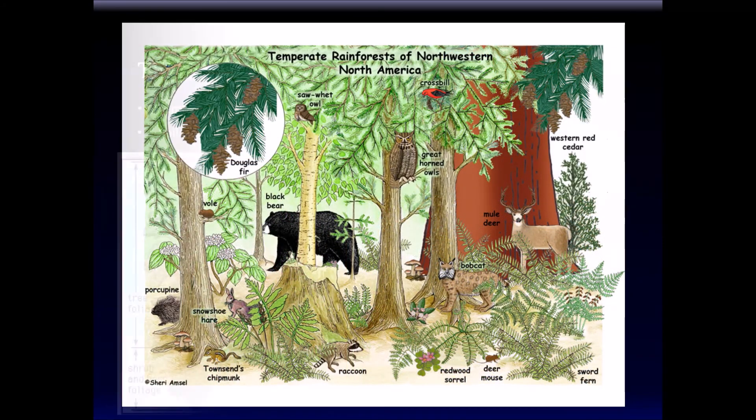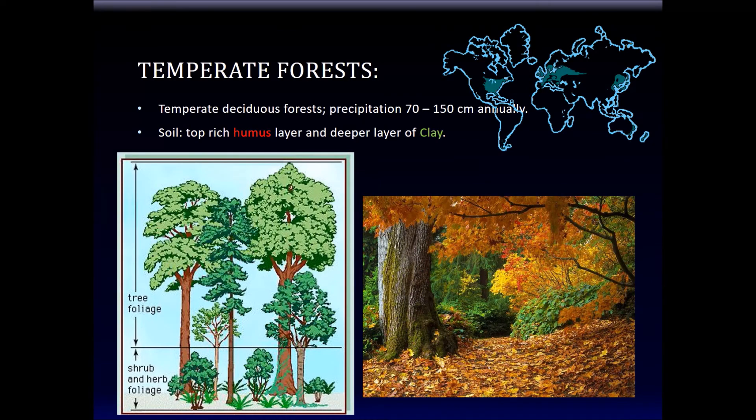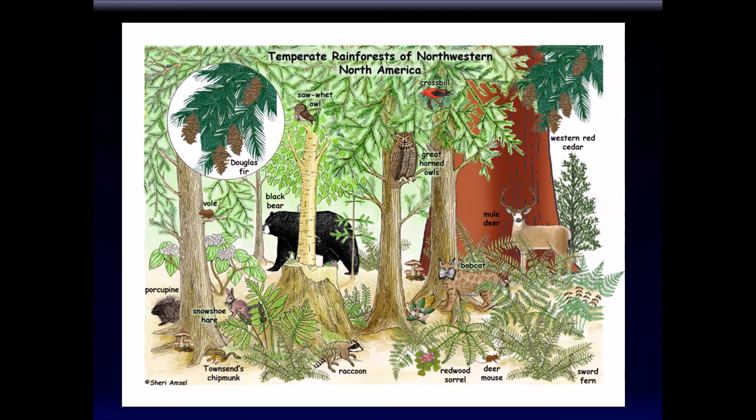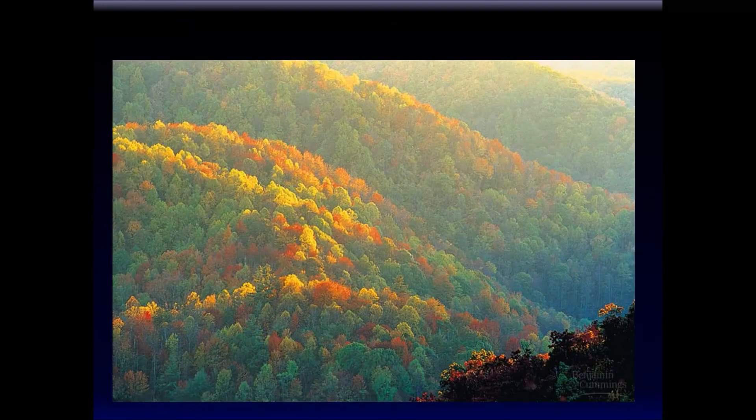So, the word deciduous. What does the word deciduous mean? Fall. The leaves fall. You know what? Baby teeth. Baby teeth. They're called deciduous teeth. Deciduous. Teeth that fall. Fall. Deciduous teeth. These are, of course, you guys know what kind of a life over here. Beautiful. Season changes. Leaves changes.